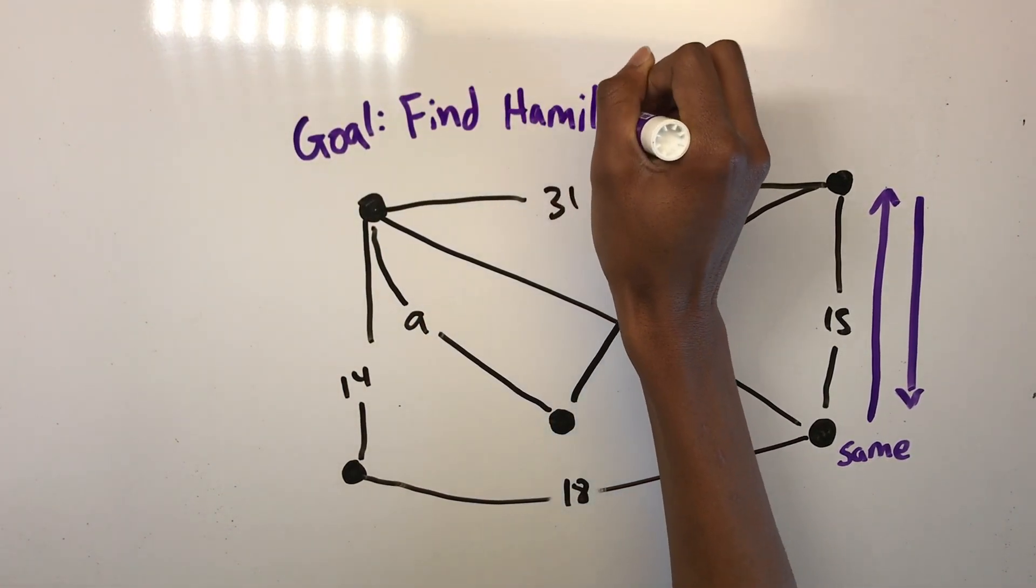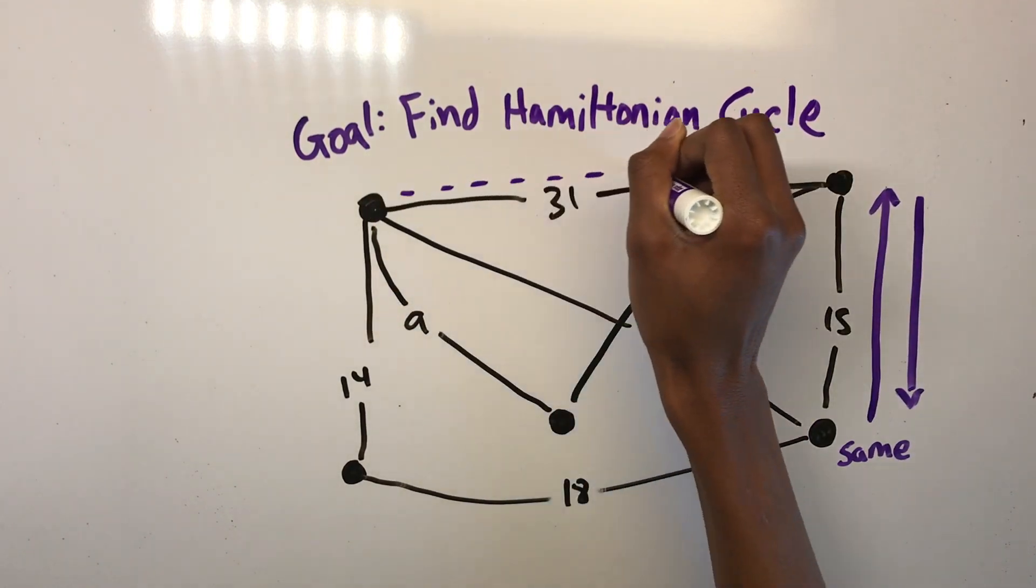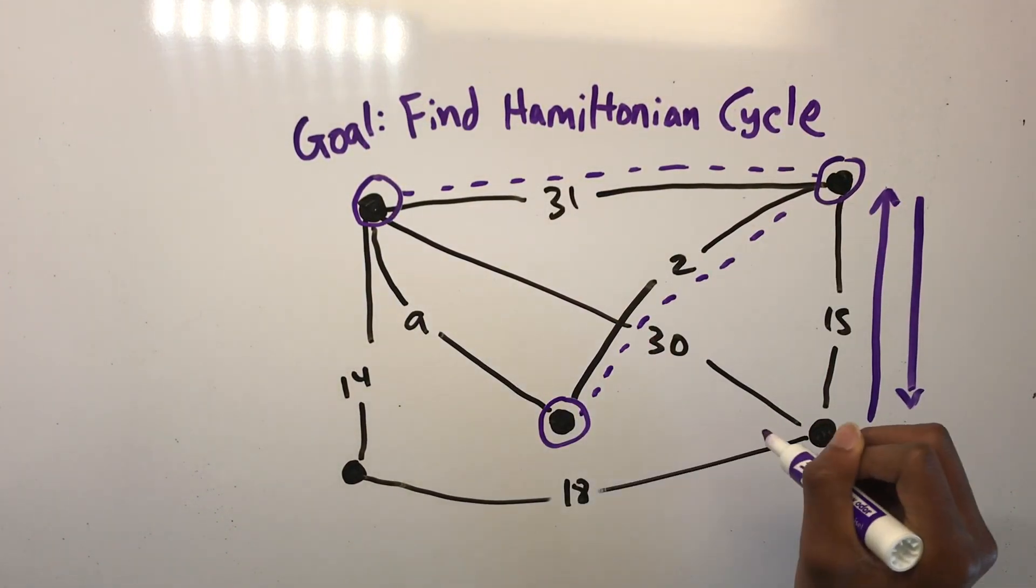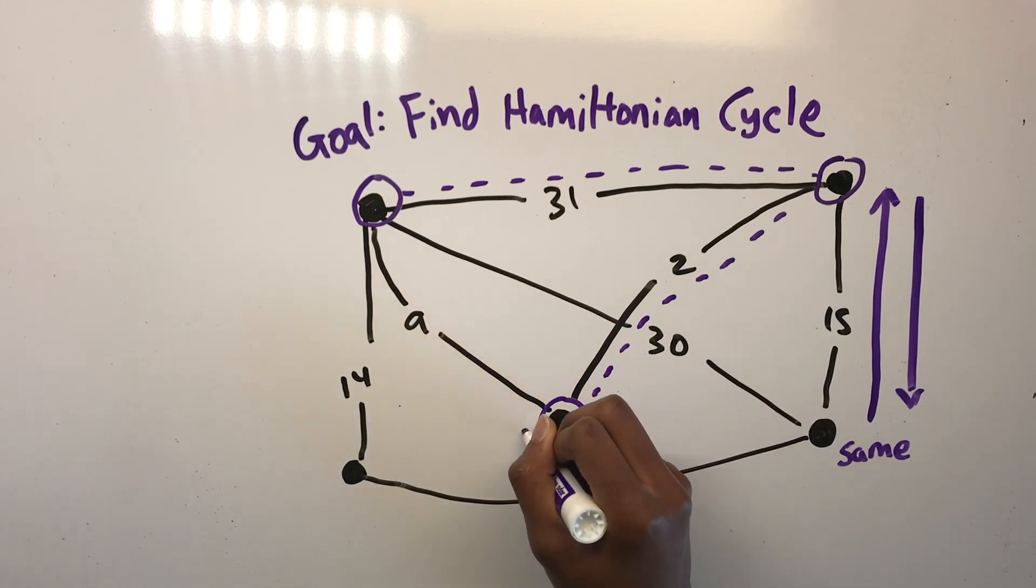To put it differently, the data consists of integer weights assigned to the edges of a finite complete graph. The objective is to find a Hamiltonian cycle, that is, a cycle passing through all the vertices, of the minimum total weight.